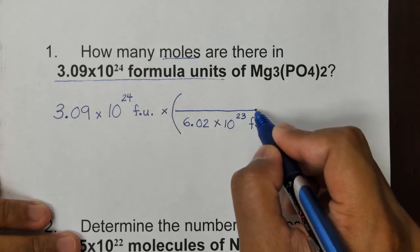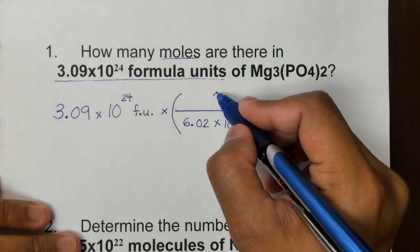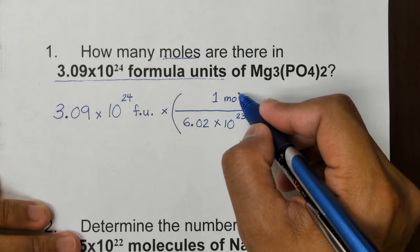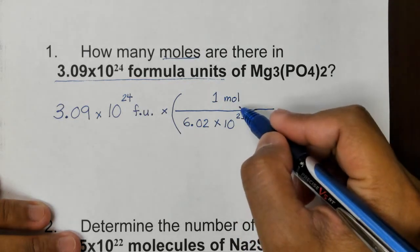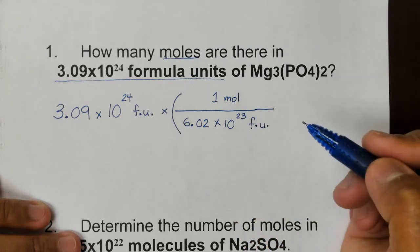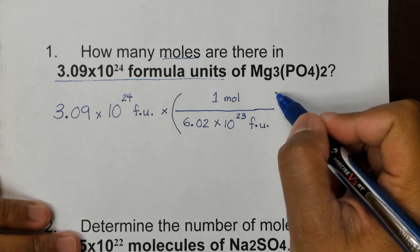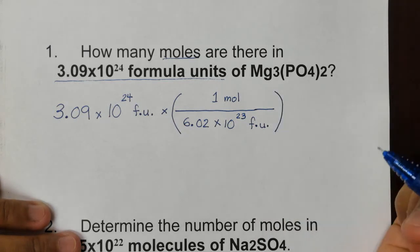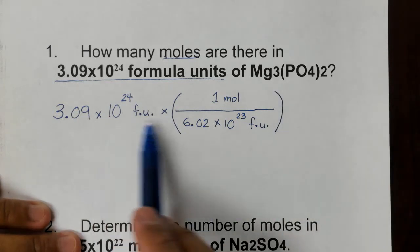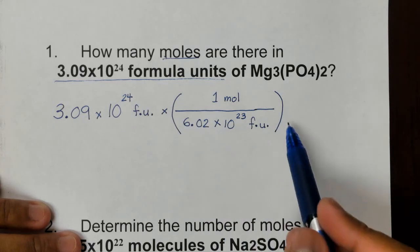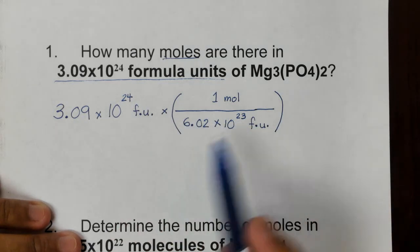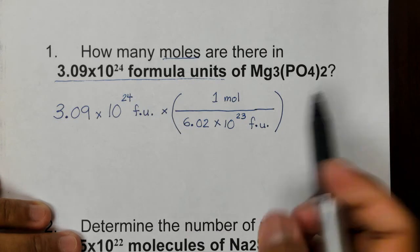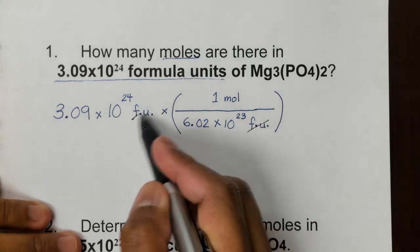Because we use formula units here, this will also have formula units unit. And then now the one on top will be the one mole. Mole can be written with an e or no e, that's okay. Next we close the parenthesis. So this is how the dividing works. If we're going to shortcut the whole thing, the unit f.u. will cancel out here.